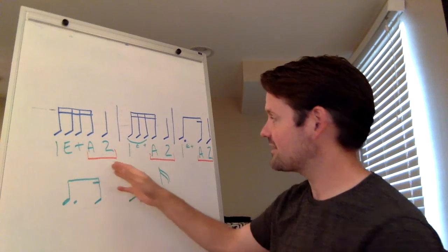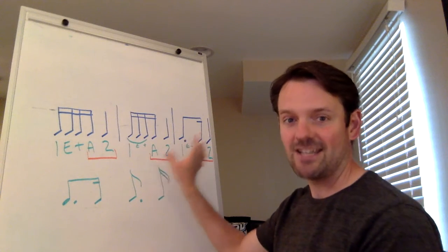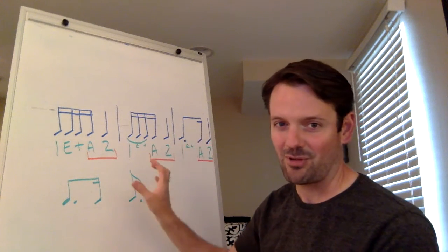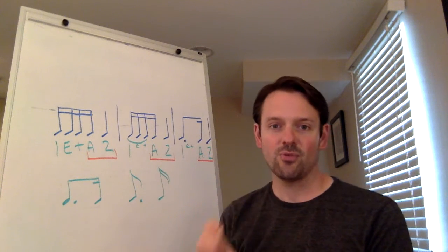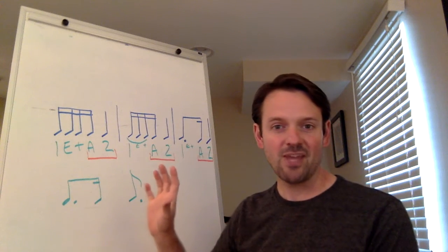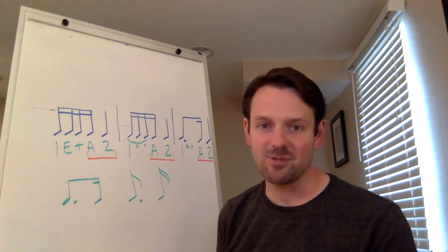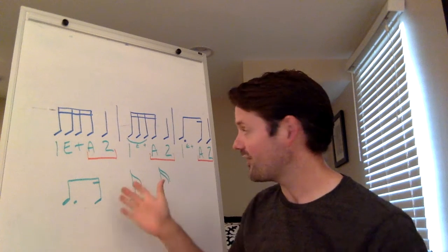With dotted eighth sixteenths, usually the composer really wants the uh next to the two. That's why they write that rhythm. So, make sure that you're putting the uh and the two right next to each other. And if you can get this rhythm down, then we have almost any piece of music that we can play rhythmically next year. So, work hard on it.